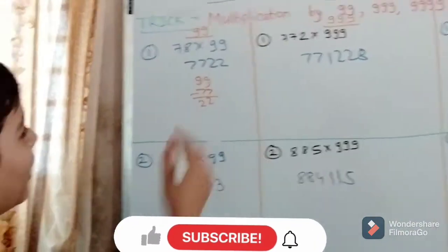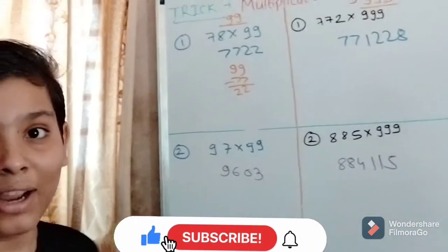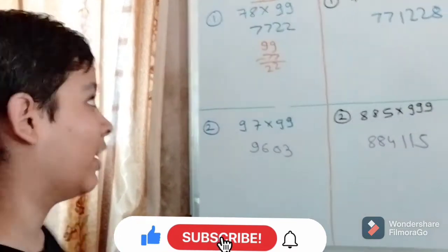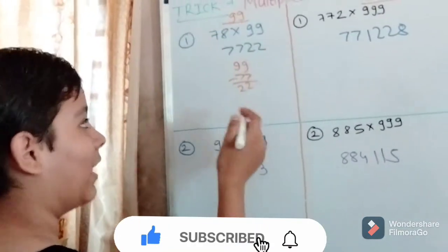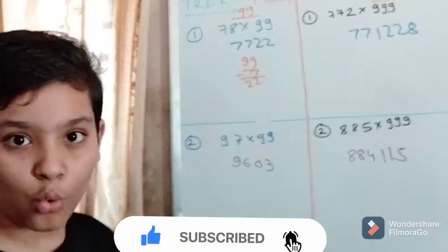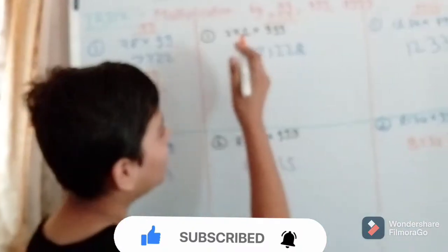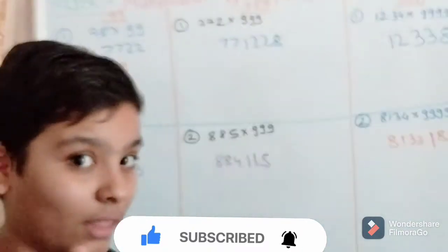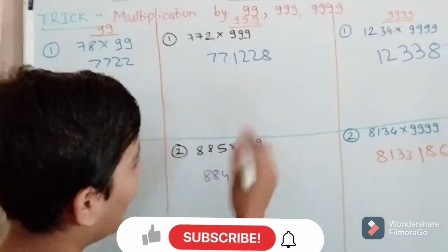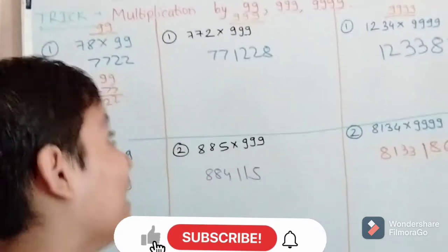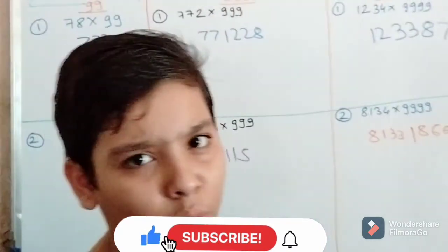78 into 99. 78 minus 1 is equal to 77. 99 minus 77 is equal to 22. After that, 772 minus 1 is equal to 771, and 999 minus 771 is equal to 228.